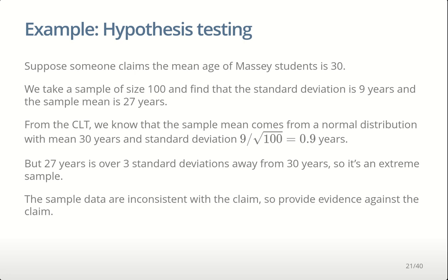Our conclusion would be that our sample data are inconsistent with that claim because it's super extreme compared to what we'd expect given the claim. Therefore our sample provides evidence against the claim. That's how hypothesis testing works: you make a claim about the population, say what you'd expect if the claim is true — samples centered on that claim with some spread — take a sample, and see if that sample fits in with that distribution or is really extreme. If the sample is really extreme given the claim, the data are inconsistent with it and provide evidence against it.